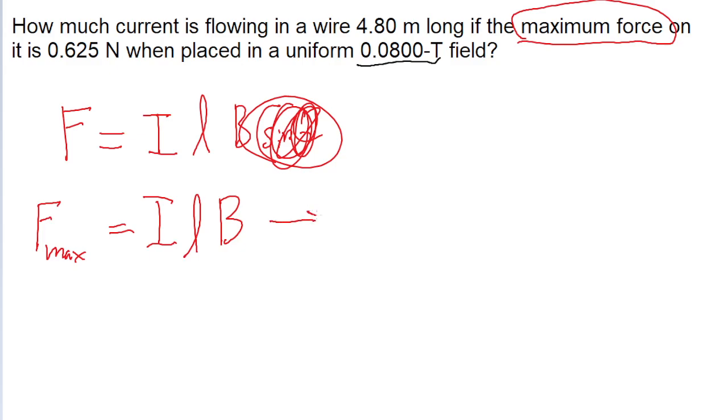But also, the problem's asking us to find the current, so we're going to need to rewrite this equation to solve it for I. So we can do that pretty simply by dividing both sides of the equation by LB, so F sub max, divided by the length of the wire, divided by its strength. Now all that's left for us to do is just plug our numbers in.